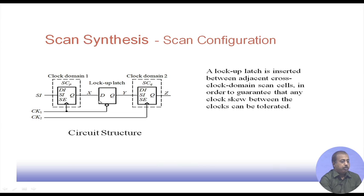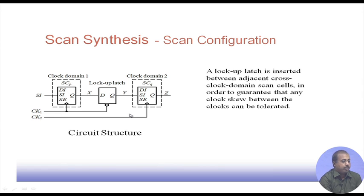When there are two different clock domains — domain one and domain two — we need to insert a lock-up latch between adjacent cross-clock domain flip-flops in order to guarantee that any clock skew between the clocks can be tolerated. If clock one drives one domain and clock two drives another, the time difference between them may change over time. When the clock is low, the lock-up latch holds the value, and when the clock becomes high, it remembers the previous value.